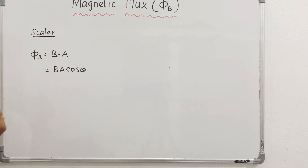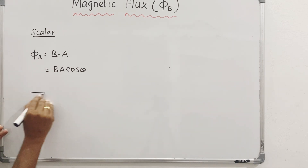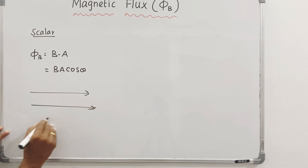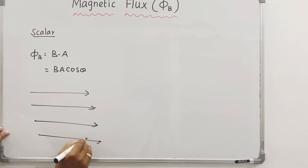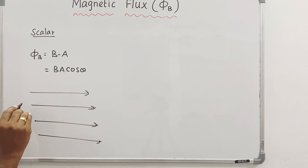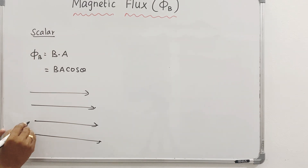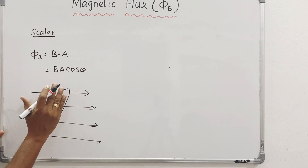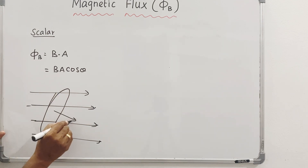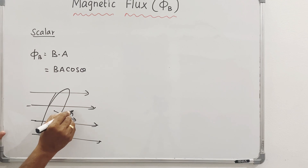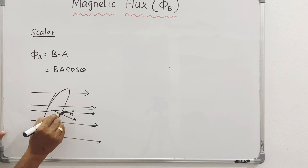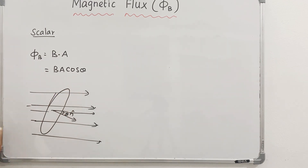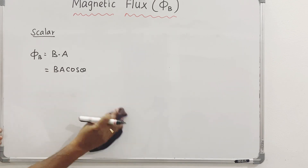Let's talk about the electric flux and magnetic flux. The magnetic flux is the number of magnetic field lines passing through a particular area that is normal. We will put an area and take the normal to the area to find the magnetic flux.